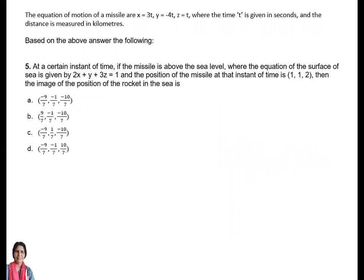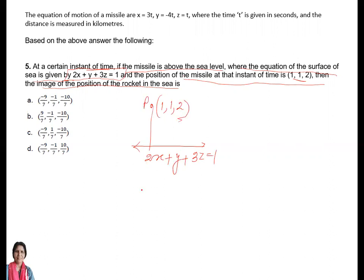Question number 5 — this is a very important question. At a certain instant of time, if the missile is above sea level where the equation of the surface of the sea is given by 2x + y + 3z = 1 and the position of the missile at this instant is (1, 1, 2), then what is the image of the position of the rocket in the sea? We can imagine the sea level is denoted by 2x + y + 3z = 1, and the point is P = (1, 1, 2). We need the image P' — the distance PQ is the same as P'Q because image is formed at equal distance.